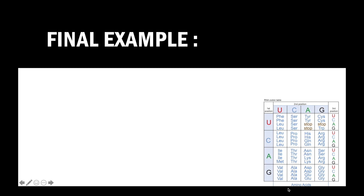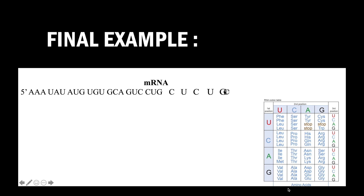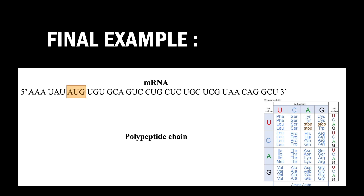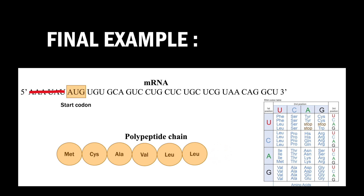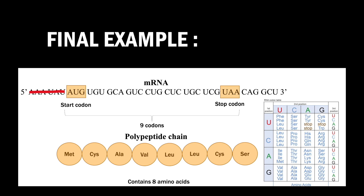Now let's try the final example. With the information provided in the table, translate this mRNA sequence into proteins. You are free to pause to try the translation. Since the start codon appears three codons down from the beginning of the mRNA, the two codons prior to that will not be translated. The stop codon in this mRNA is UAA. Since there are 9 codons from the start codon to the stop codon, and since the stop codon will not be translated, the polypeptide chain will consist of 8 amino acids.